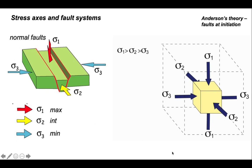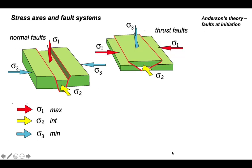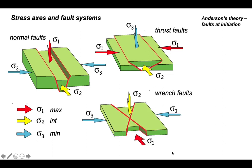Let's step this into three dimensions. This was worked out by Anderson in the early part of the 20th century, showing how conjugate faults relate in three dimensions to the three principal stresses — sigma 1, sigma 3, and sigma 2, the intermediate stress axis. For normal faults, sigma 1 is vertical and sigma 3 is horizontal. That situation flips for thrust faulting: sigma 3 is vertical and sigma 1 is horizontal. For strike-slip faults, both sigma 1 and sigma 3 are horizontal, and sigma 2 is vertical. An important rule is that sigma 2 runs parallel to the intersection between the two conjugate faults. This is Andersonian faulting.